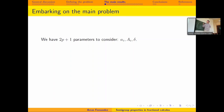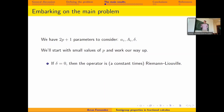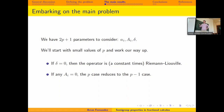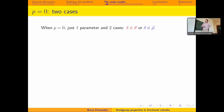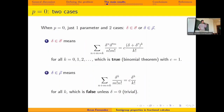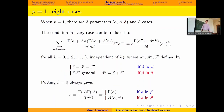Now let's start on the main problem. We have 2P + 1 different parameters to consider, and we start with small values of P and work our way up. Some basic properties: if delta equals zero, the problem is trivial and reduces to Riemann-Liouville. If a big A equals zero, we reduce from the P case to the P-1 case — essentially giving an induction proof. For P=0 it is just one parameter, delta, and there are two cases: one is true by the binomial theorem, the other is false — giving one possibility for P=0.